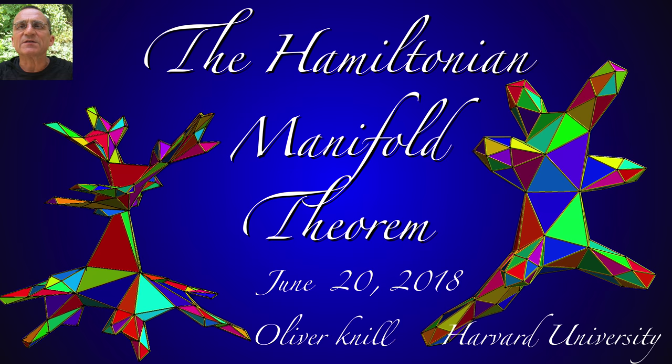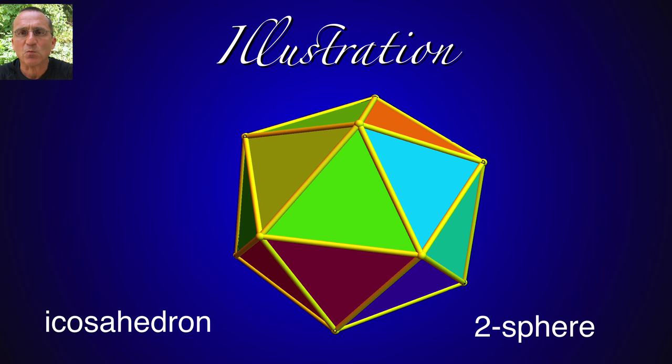The Hamiltonian Manifold Theorem states that combinatorial manifolds define graphs which admit the Hamiltonian cycle, a closed path which visits every vertex exactly once. Here we see such a manifold. It's the icosahedron.